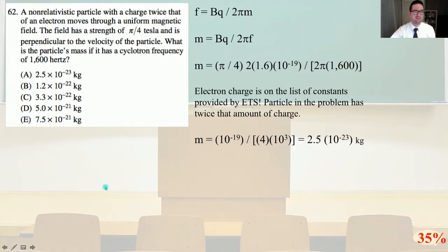Number 62. A non-relativistic particle with a charge twice that of an electron moves through a uniform magnetic field. The field has a strength of π/4 Tesla and is perpendicular to the velocity of the particle. What is the particle's mass if it has a cyclotron frequency of 1600 Hz? So we know frequency F equals BQ/(2πm) where m equals BQ/(2πF).